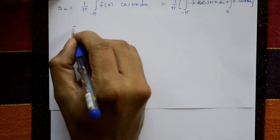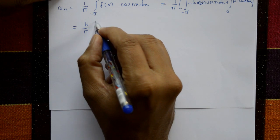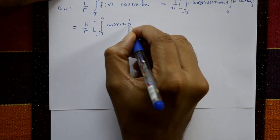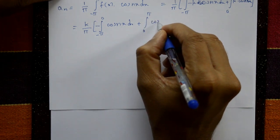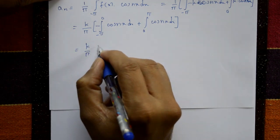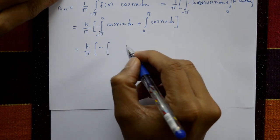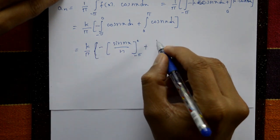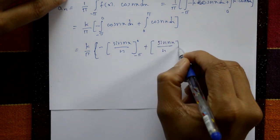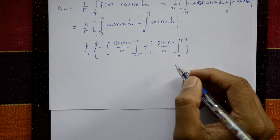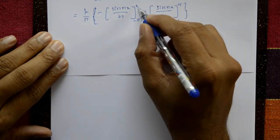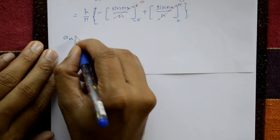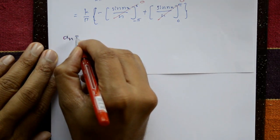Take k outside: k/π times [minus integral from minus π to 0 of cos(nx) dx plus integral from 0 to π of cos(nx) dx]. Integrating: k/π times [minus sin(nx)/n from minus π to 0, plus sin(nx)/n from 0 to π]. Putting x=0 or x=π both values are 0, therefore aₙ equals 0.